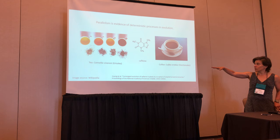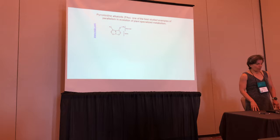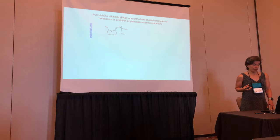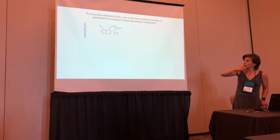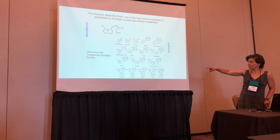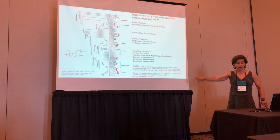Here's one particularly salient example for this time in the morning: the parallel origin of caffeine in tea and in coffee. Among plant-specialized metabolites, pyrrolizidine alkaloids, which I may refer to as PAs, are one of the best-studied examples of parallelism. PAs have this characteristic structure with a necine base conjugated to a necic acid, and here you can see some of the structural variation, but also the consistent presence of that necine base.